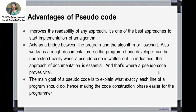Pseudocode also works as rough documentation. Before writing the actual program, you can trace the steps and write down the programming logic. So it is a rough document for your program. The main goal of pseudocode is to explain what exactly each line of a program should do, making it easier for the programmer to follow the instructions.